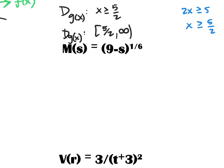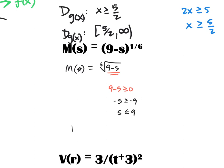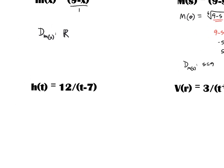Here's a good example: the one-sixth power is an even root — we have the sixth root of (9 minus s). I want that radicand to be greater than or equal to zero, so 9 minus s ≥ 0, meaning negative s ≥ negative 9. When I flip the inequality, the domain of m(s) is s less than or equal to nine.